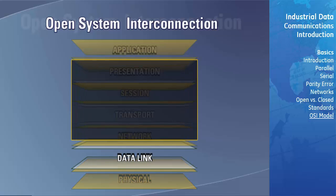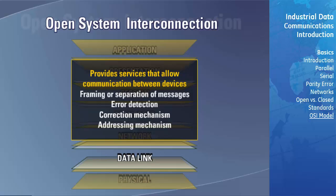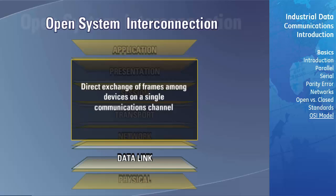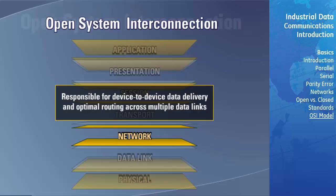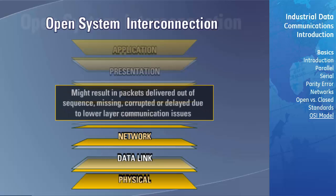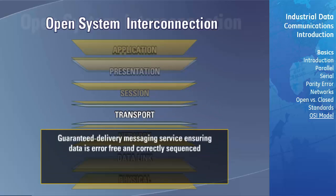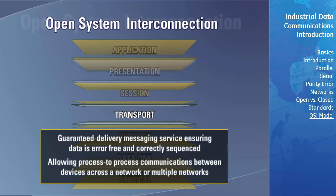The data link layer provides the services that allow communication between devices, including framing or separation of messages, error detection and correction mechanisms, and an addressing mechanism. While the data link layer is concerned with direct exchange of frames among devices on a single communications channel, the network layer is responsible for device-to-device data delivery and optimal routing across multiple data links. These underlying layers might result in packets that are delivered out of sequence, missing, corrupted, or delayed. To address this, the transport layer provides a guaranteed delivery messaging service that ensures data is error-free and correctly sequenced, allowing process-to-process communications between devices across a network or multiple networks.